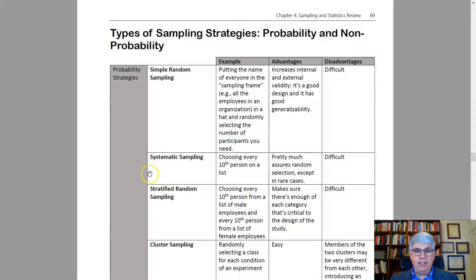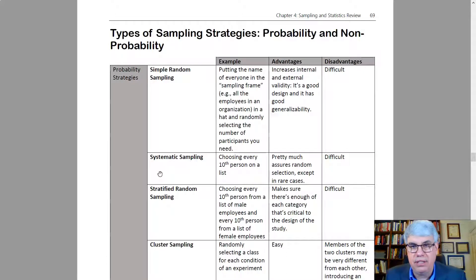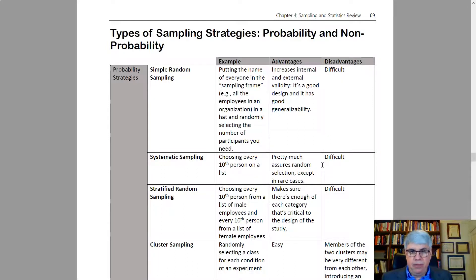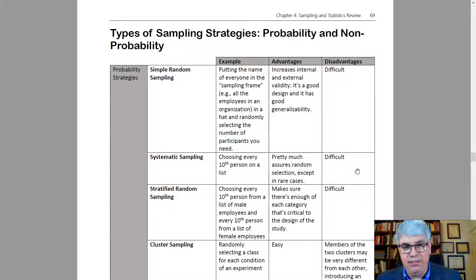Something a little easier is systematic sampling, where you get the list of everybody in the organization and choose every 10th person — no need to put all names in a hat or use a random number generator. The advantage is that it pretty much assures random selection, except in rare cases where, for instance, you might only get one person named Smith and skip the other nine. The disadvantage is still the difficulty of obtaining the full list and getting chosen participants to respond.